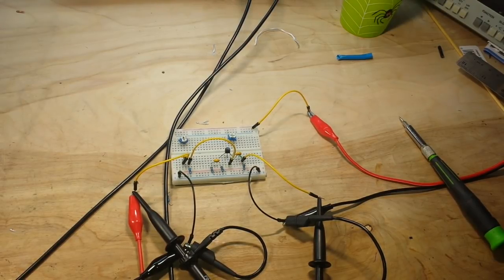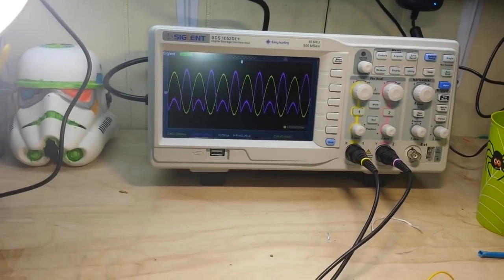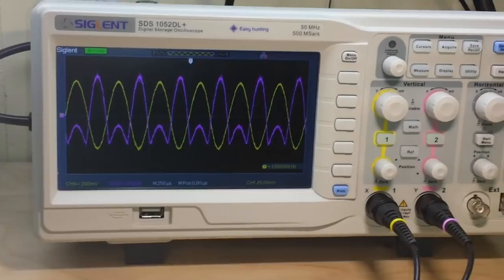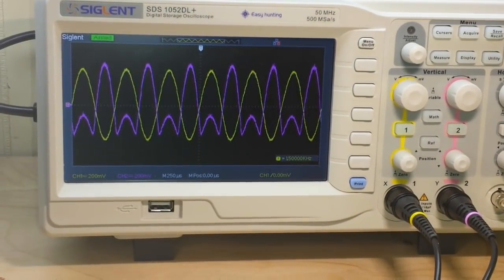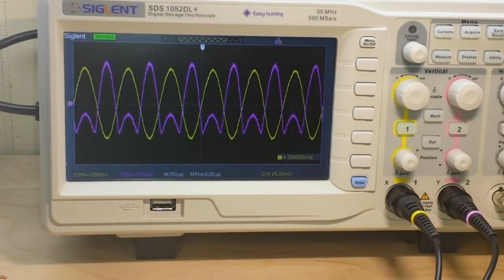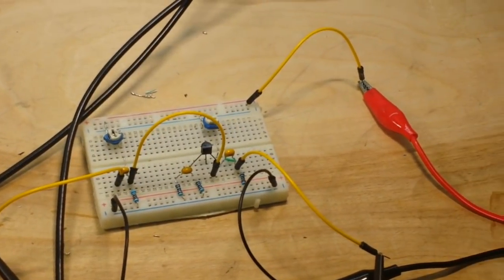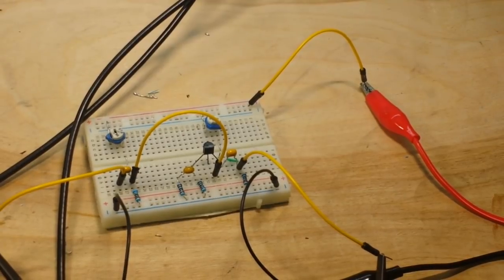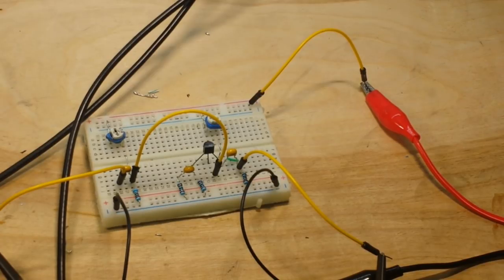Alright, let me get the scope ready. Here we go, and if we come in there and look at the scope, it looks exactly like the original. So affected more by heat, less by cold. And there you can see the effects of temperature on a 2N2222 BJT transistor.